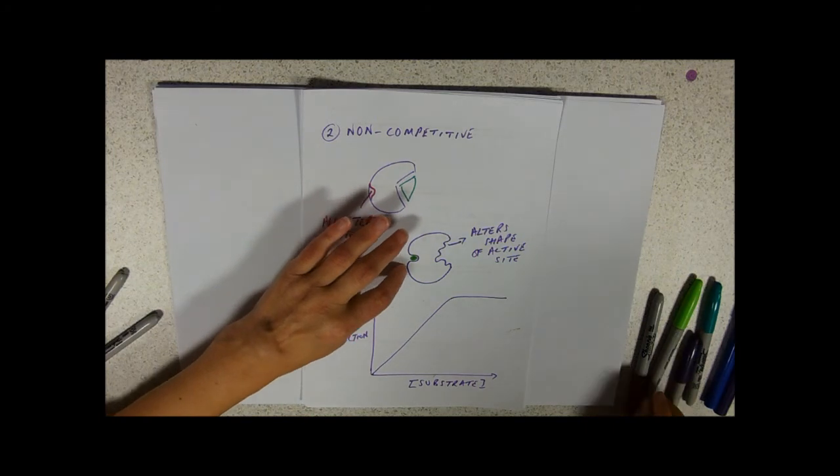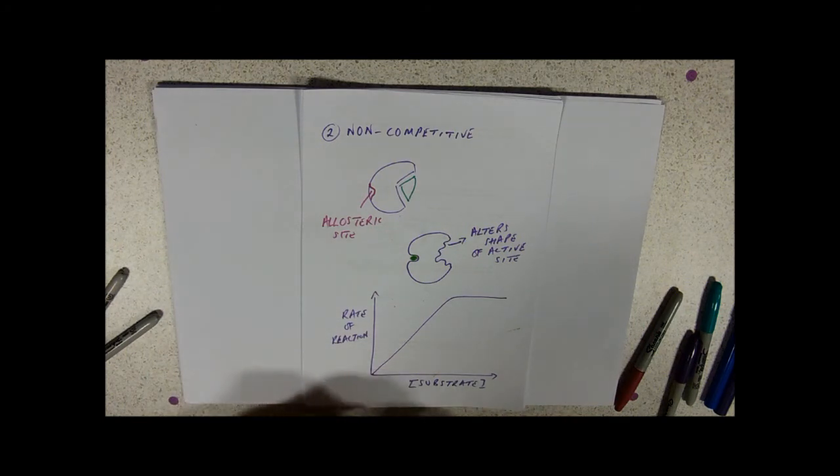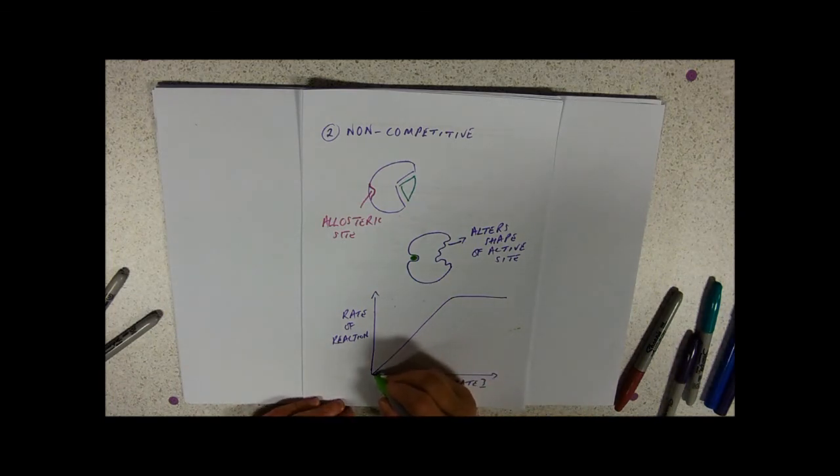But, of course, here, if we've got some inhibitor, it will alter the shape of those active sites, and therefore those active sites are no longer available. They cannot possibly do successful collisions. So what you get is a graph that goes underneath.